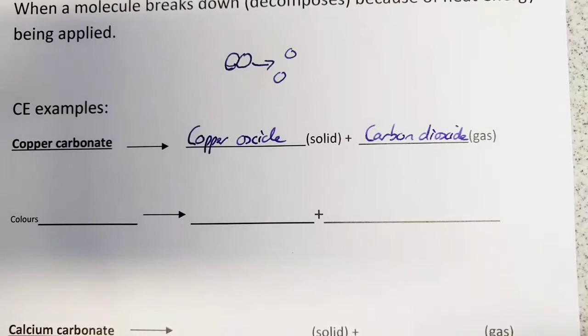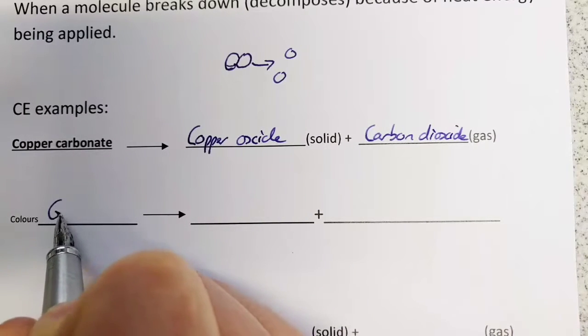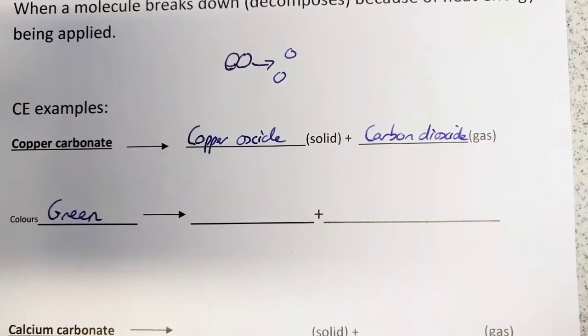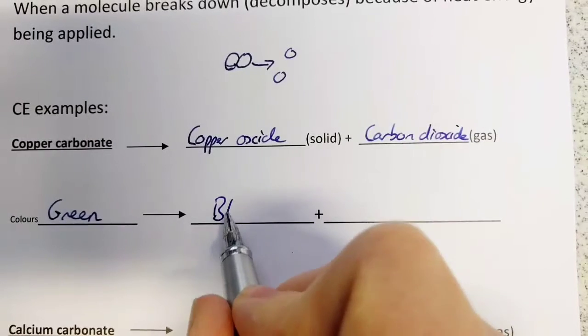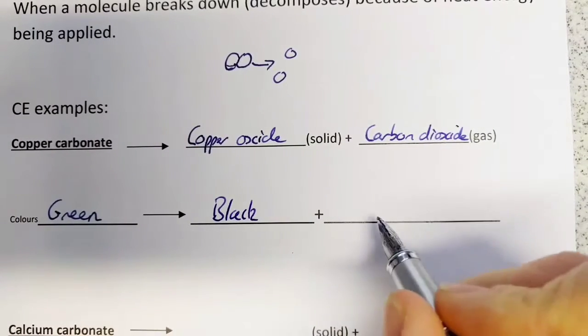The colors of these different things: copper carbonate is a green color, kind of aquamarine, but don't write that, just write green. Copper oxide is a black powder, and carbon dioxide is a colorless gas. If you're watching this from America, that's how you spell colorless.